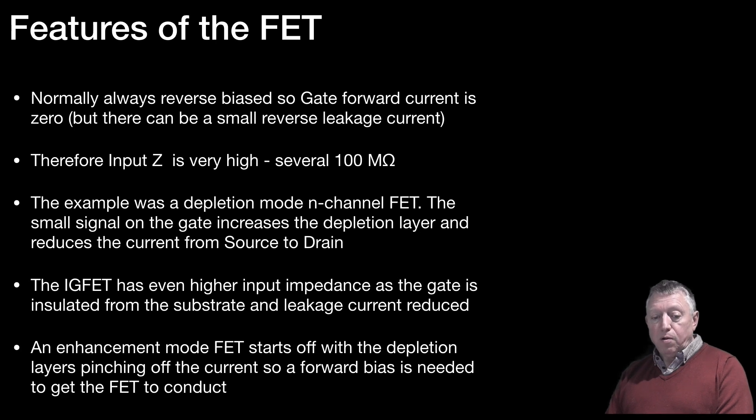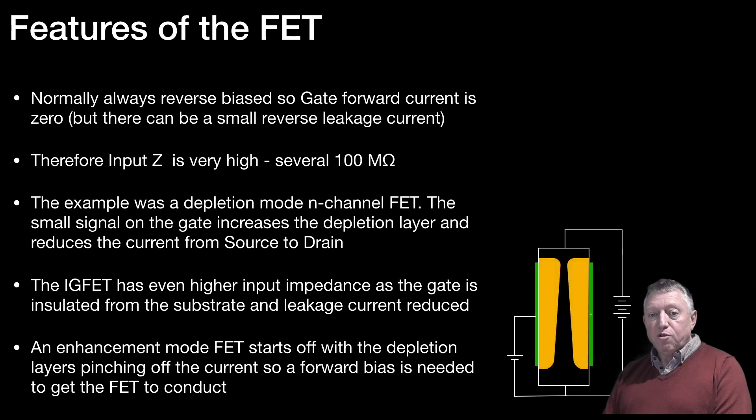An enhancement mode FET starts off with the depletion layers pinching off the current so that forward bias is needed to get the FET to conduct. And we've shown that there on the screen. That we've put a small plus or positive charge, positive voltage on the gate to allow the gates to open slightly and to allow the current to go through.